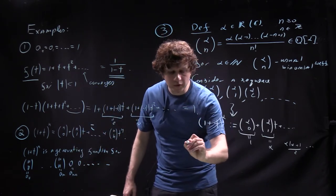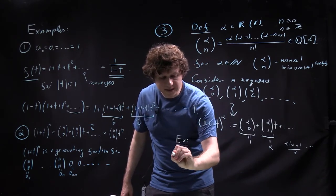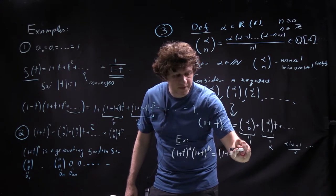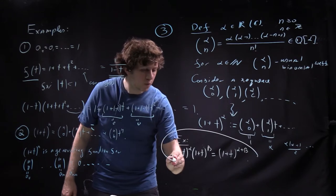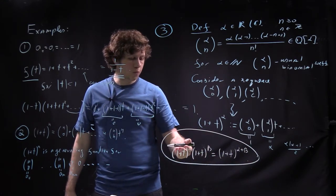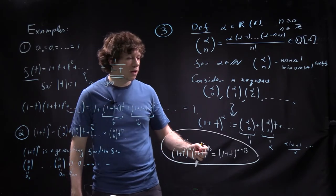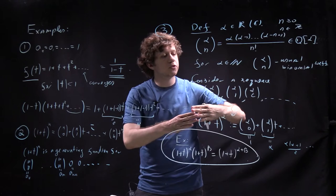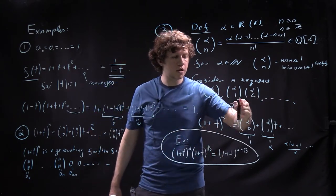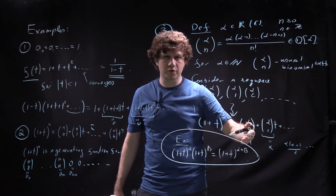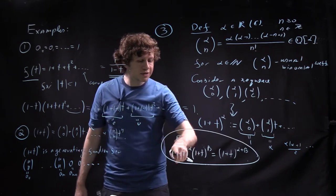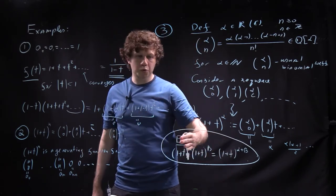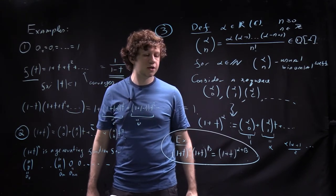The corresponding generating function is denoted (1+t)^α, defined as the series: C(α,0) + C(α,1)·t + C(α,2)·t² + ..., an infinite power series with polynomial-in-α coefficients. Whether it converges depends on t and α. But one can prove as an exercise that (1+t)^α · (1+t)^β = (1+t)^(α+β). To verify this, one writes out the series for each side and multiplies — at each step only finitely many terms contribute, so no convergence is needed.